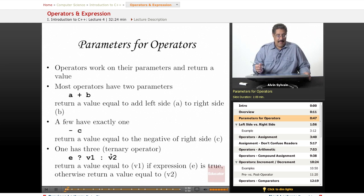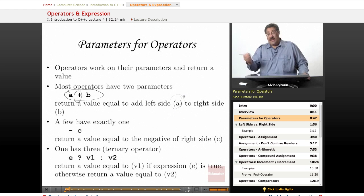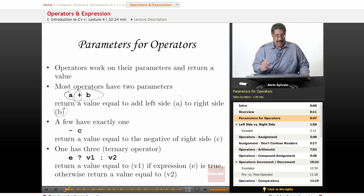Operators work on their parameters and return a value. Most of them have two parameters. You've got A plus B, plus is the operator. A is the one on the left, B is the one on the right. It returns a value that's equal to the left side A added to the right side B. May seem straightforward, but it gets more complicated later.